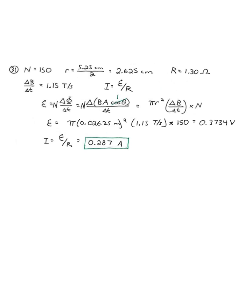Number 31 has a 150-turn circular coil with diameter 5.25 centimeters, resistance 1.30 ohms. Magnetic field perpendicular to the coil is changing at 1.15 teslas per second. Find the induced current. We're once again going to need the radius. It's going to be half of the diameter, 2.625 centimeters.